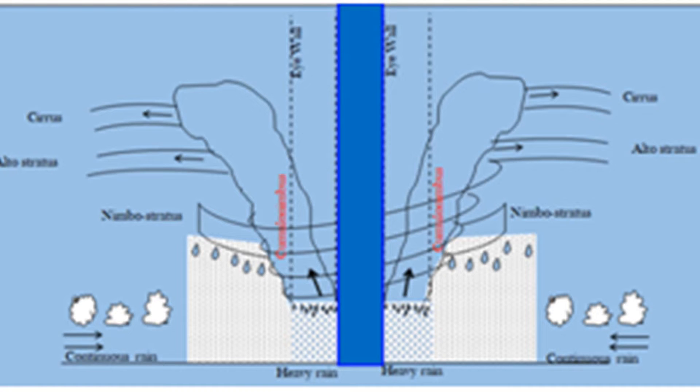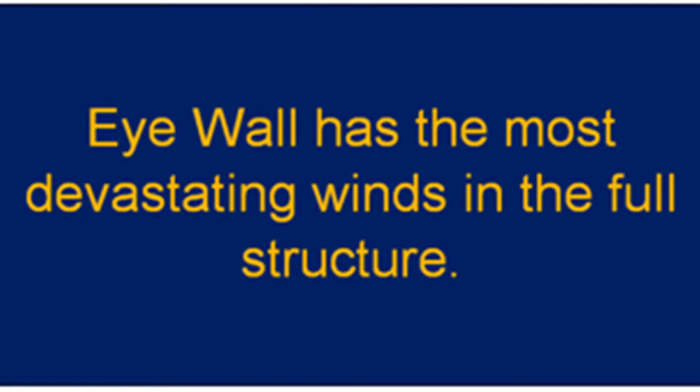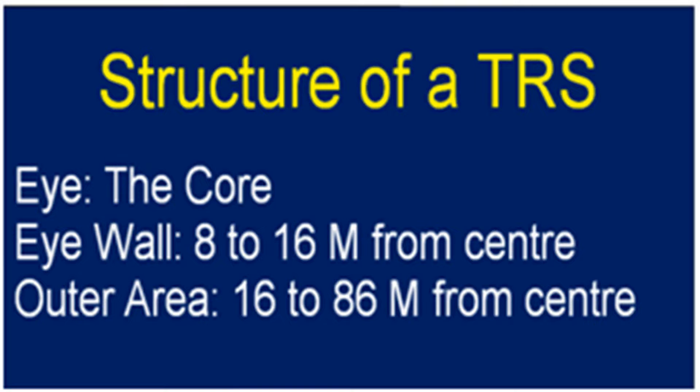The Eye is relatively calm with clear skies on top — we will discuss the reason for that later. Surrounding the eye, typically from 8 to 16 nautical miles, we have the Eye Wall. The Eye Wall is the most devastating part of the TRS structure, with winds reaching phenomenal speeds. Outside the Eye Wall we have the outer zone. The Eye is associated with clear skies and relatively calm weather; the pressure is low.